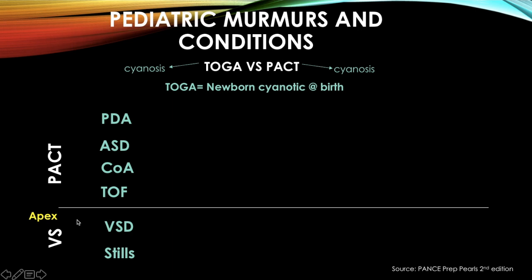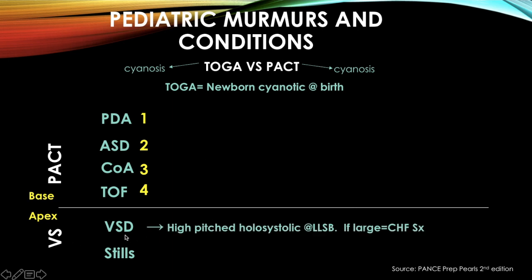All pediatric murmurs here are systolic, though some also have diastolic components — they're easier to distinguish by apex vs. base. Label each condition 1 through 4. Ventricular septal defect is a high-pitched holosystolic murmur best heard at the left lower sternal border; if a large defect, it will cause heart failure symptoms. Still's murmur is also high-pitched and musical.